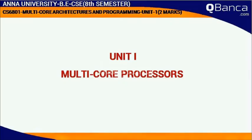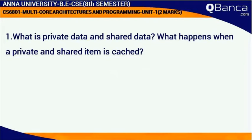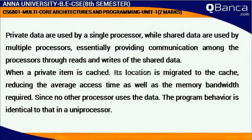Multicore Architectures and Programming, Subject Code CS6801, Unit 1: Multicore Processors. What is private data and shared data? What happens when a private and shared item is cached? Answer: Private data are used by a single processor, while shared data are used by multiple processors, essentially providing communication among the processors through reads and writes of the shared data.